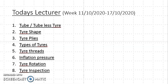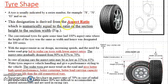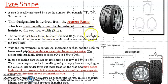In the previous video, we have seen what is a tube tire, what is a tubeless tire, and what are the advantages of tubeless tires. We also covered that the aspect ratio is equal to section height divided by section width. If both are equal, then there is a 100% aspect ratio and this series is called the 100 series.